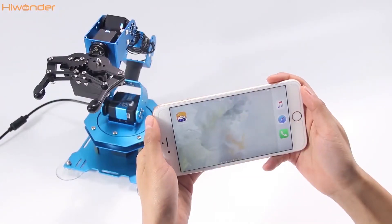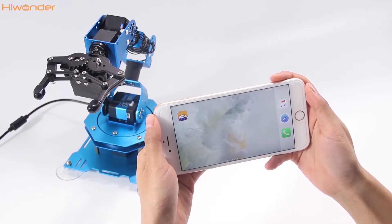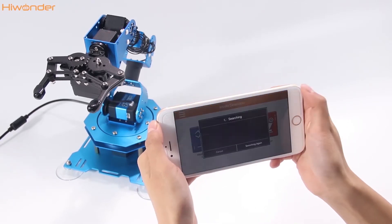Hi guys, Hiwonder here. In this video, we're going to use the mobile phone app to program an action group manually. Let's come have a try.